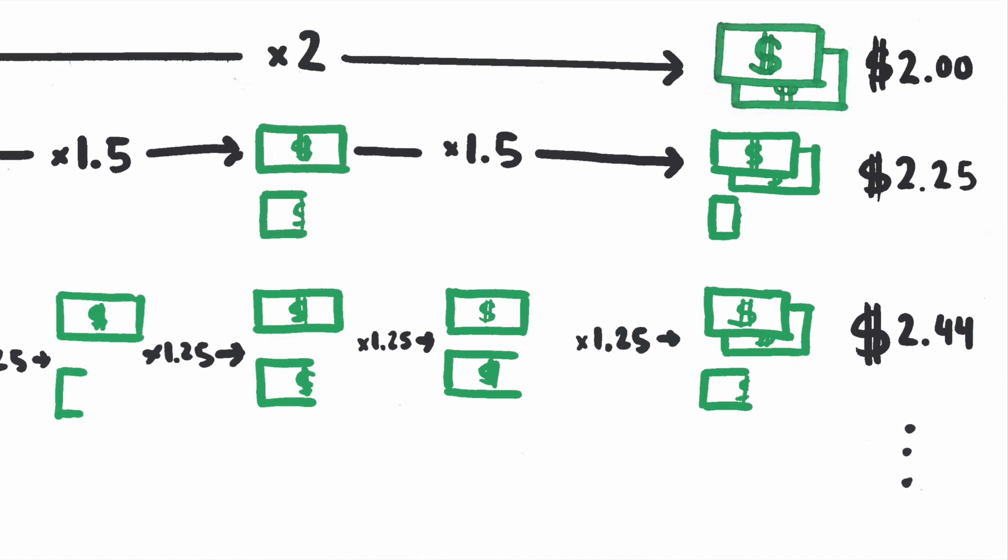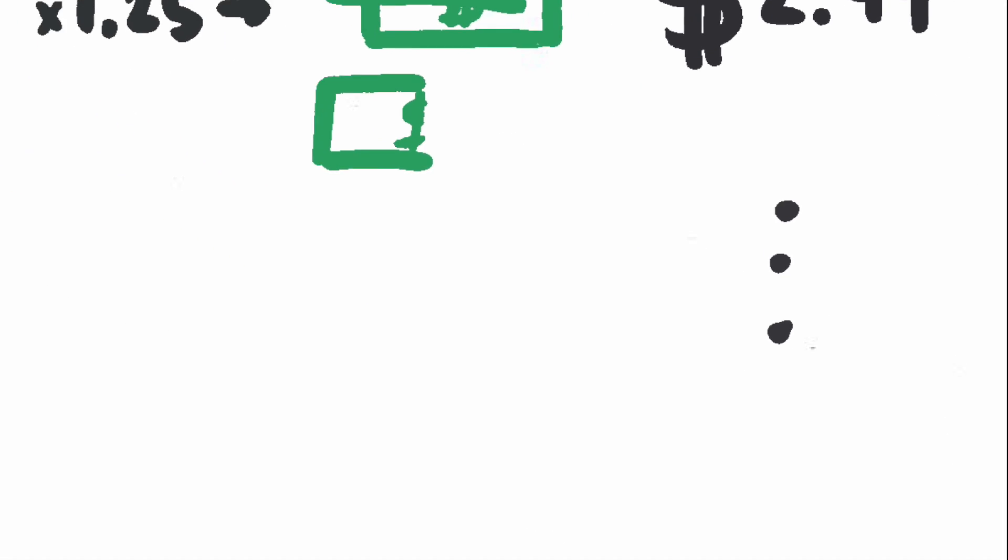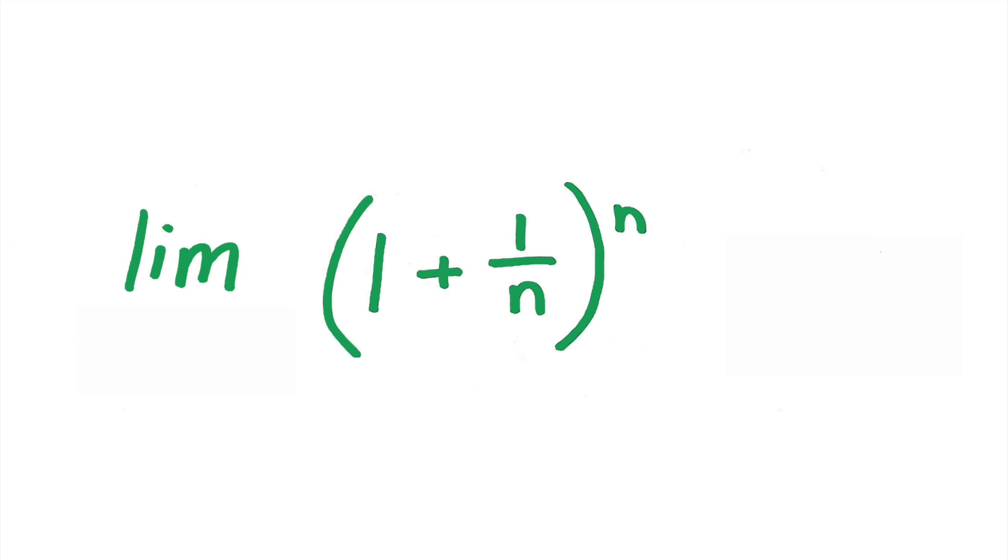Monthly, $2.61. Weekly, $2.69. See where we're going? If you increase the number of compounding periods a year towards infinity, then you'll get closer and closer to E dollars.